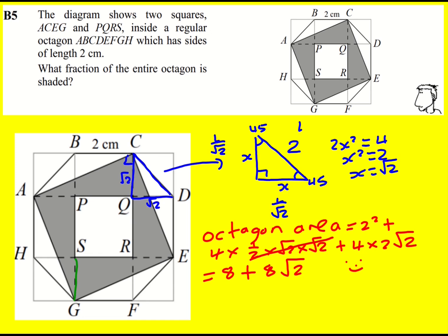Now the easiest way to work out the shaded area, I think, is to focus on the fact that we've essentially got four of these rectangles.